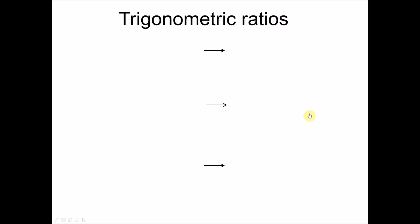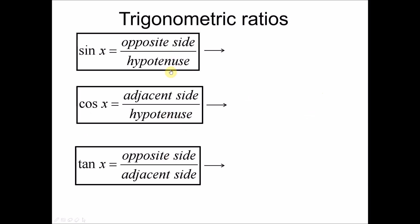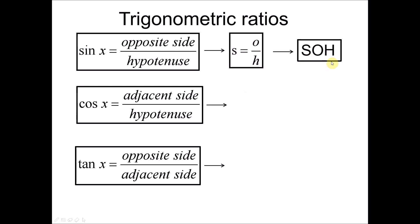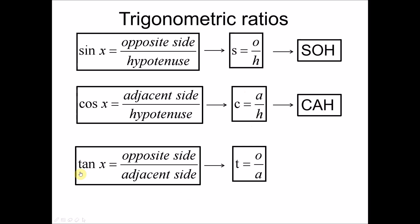To memorize the three ratios, take the first letter of each relationship: S = O/H (sine = opposite over hypotenuse), C = A/H (cosine = adjacent over hypotenuse), T = O/A (tangent = opposite over adjacent). Putting them together gives SOH-CAH-TOA. This is how we memorize the three basic trigonometric ratios used throughout the whole chapter.